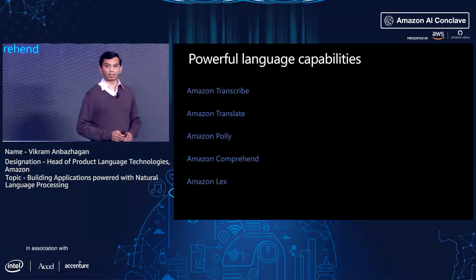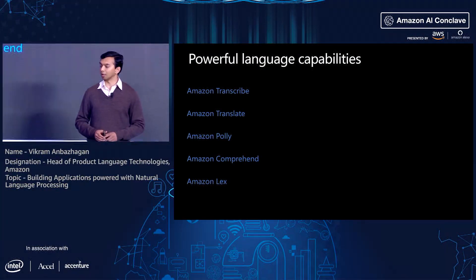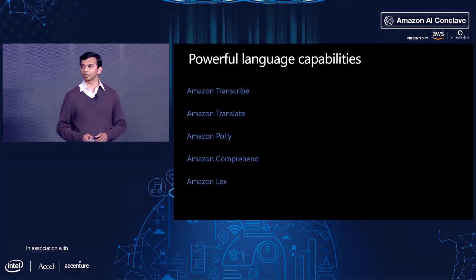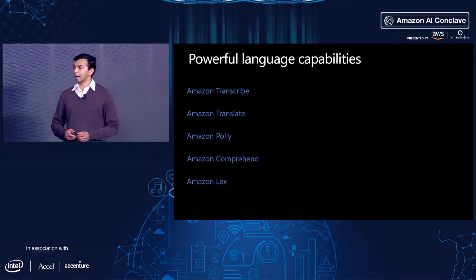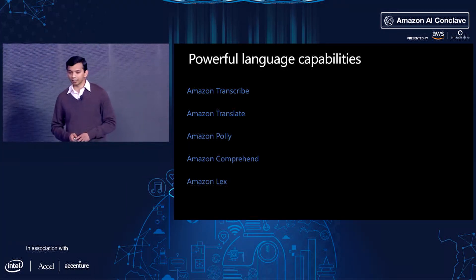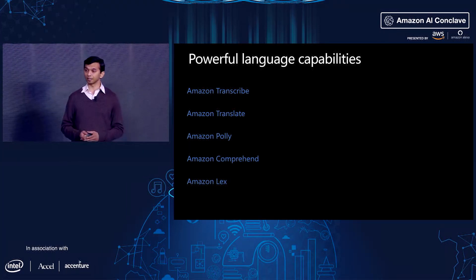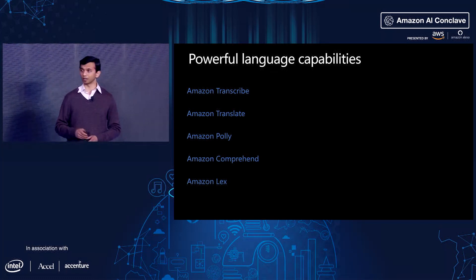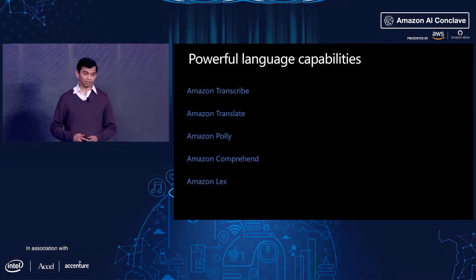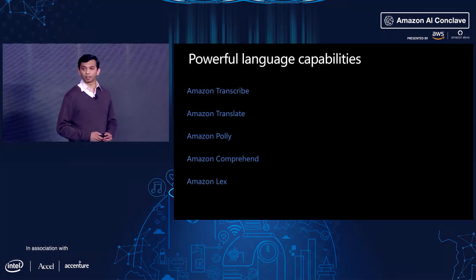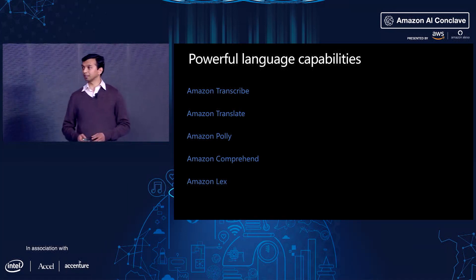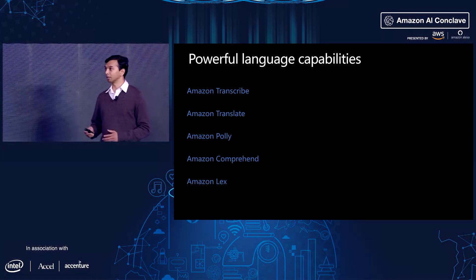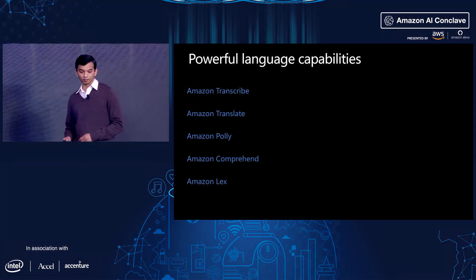Some of the capabilities I'm going to talk about are Amazon Transcribe, which is our speech recognition service; Amazon Translate, which is our translation service; Amazon Polly for text-to-speech; Amazon Comprehend for natural language processing; and Amazon Lex for building conversational interfaces.